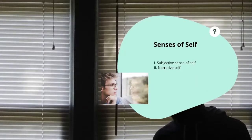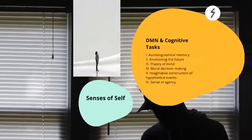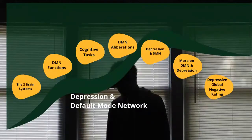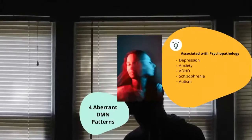The different senses of self associated with the default mode network include a subjective sense of self and a narrative self — the story of the self. Moving on, I want to look at some specific functions, because the default mode network is associated with certain forms of psychopathology.